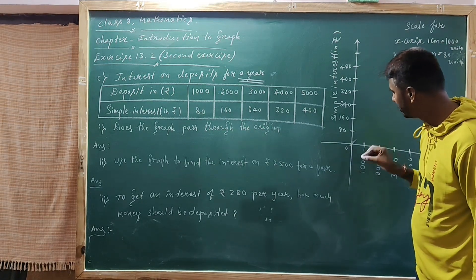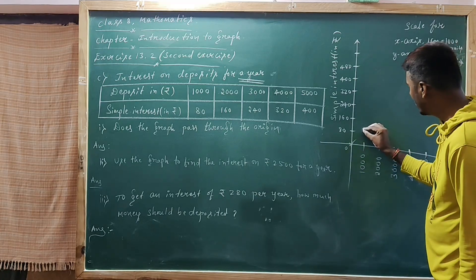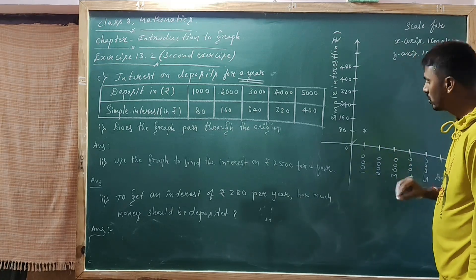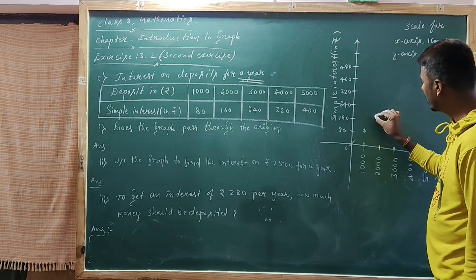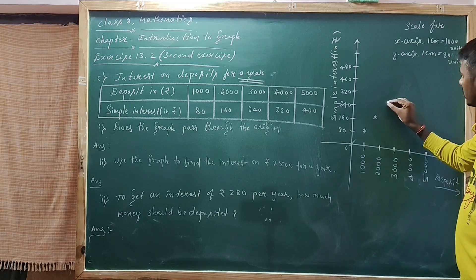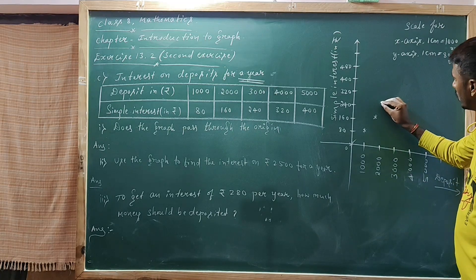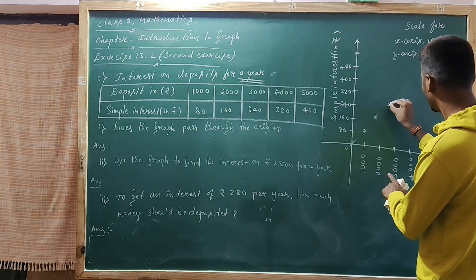If the deposit is 0, the interest is 0. Mark coordinate point (0, 0). For 1000, the interest is 80. For 2000, the interest is 160. For 3000, the interest is 240.